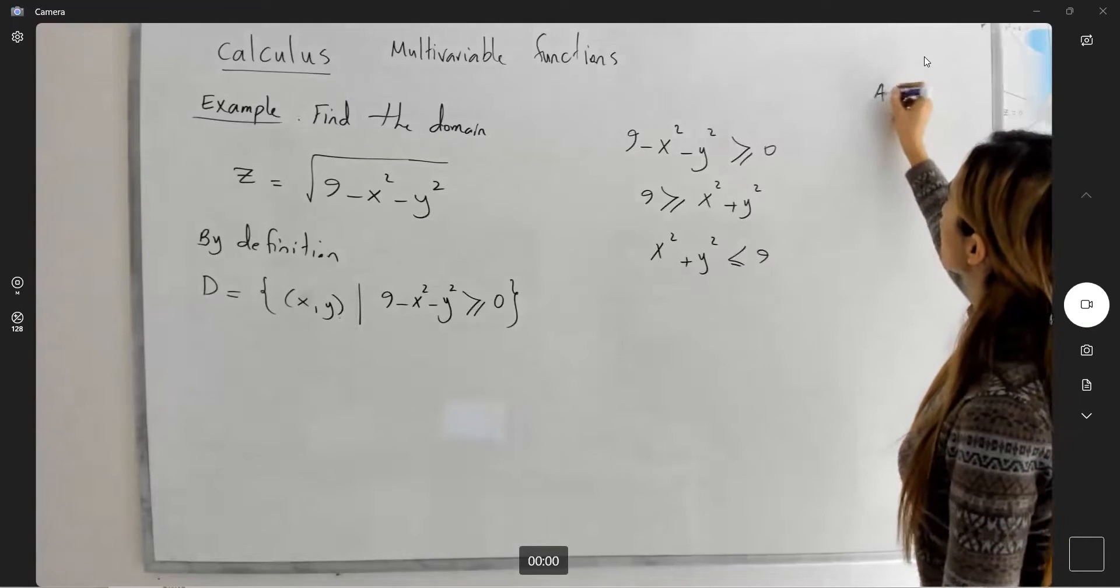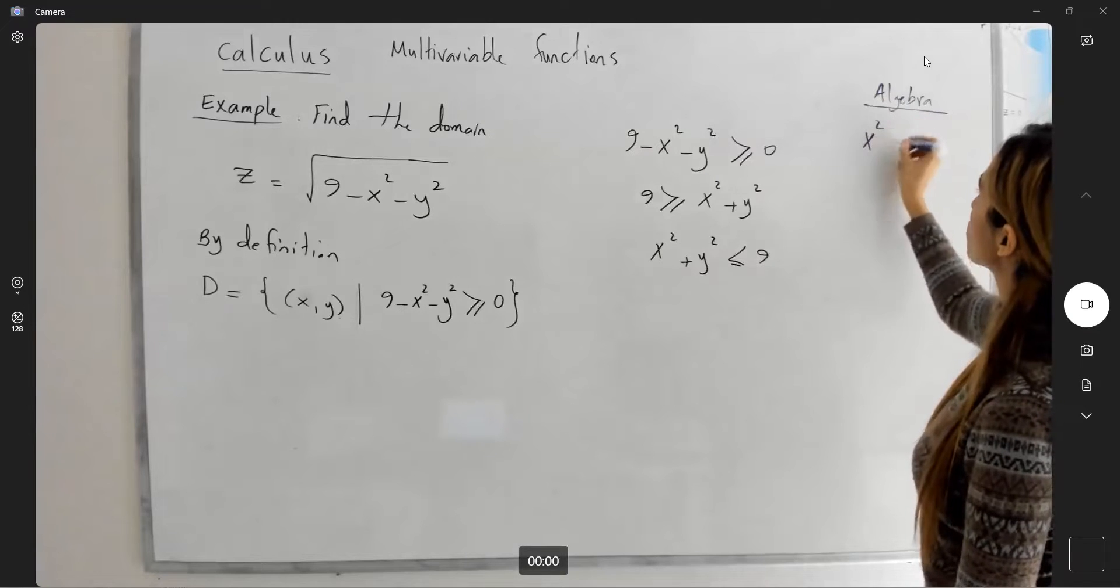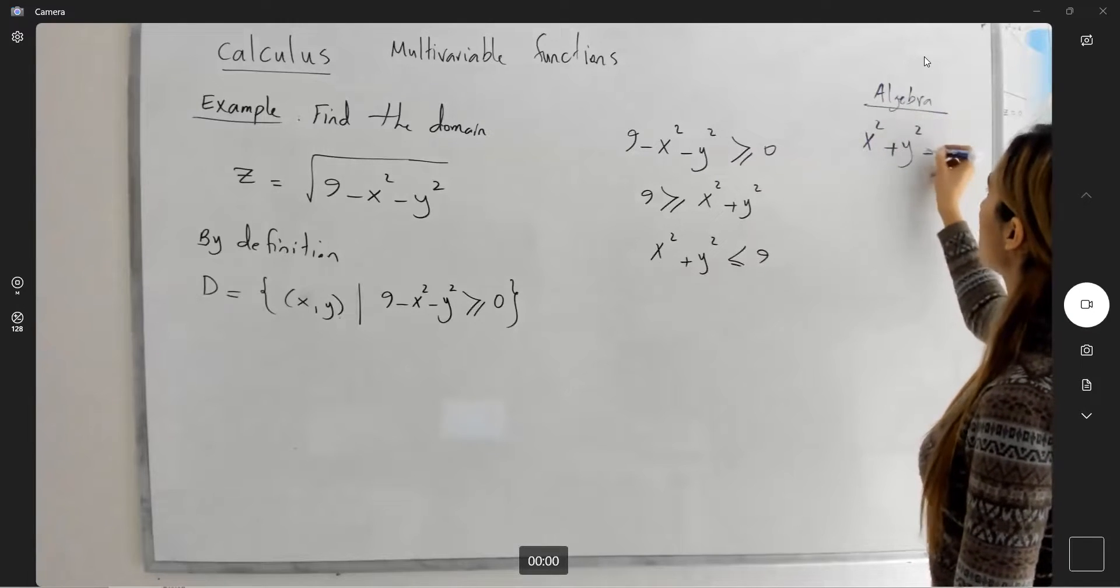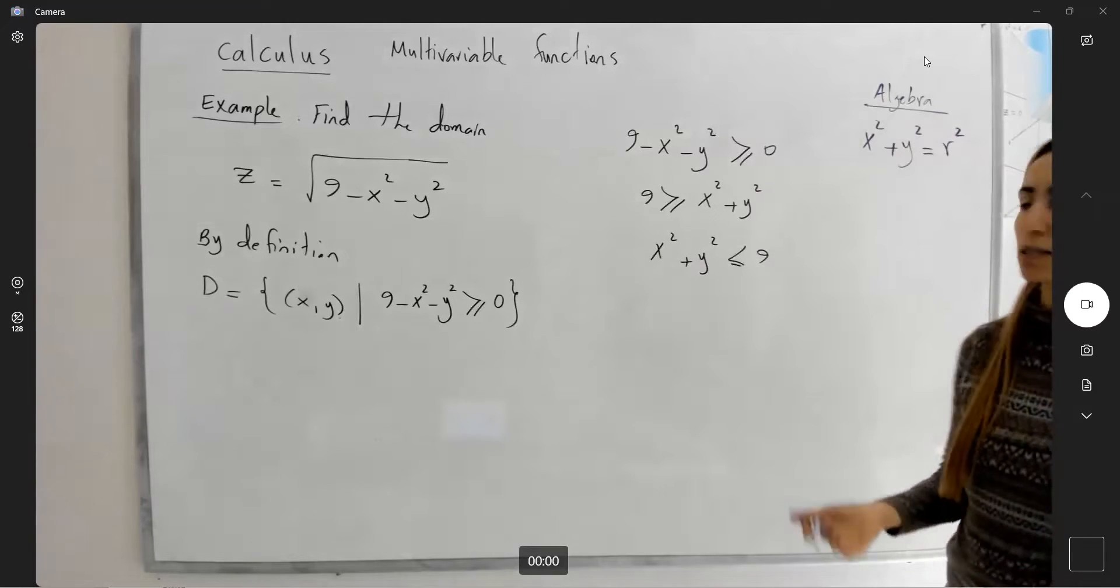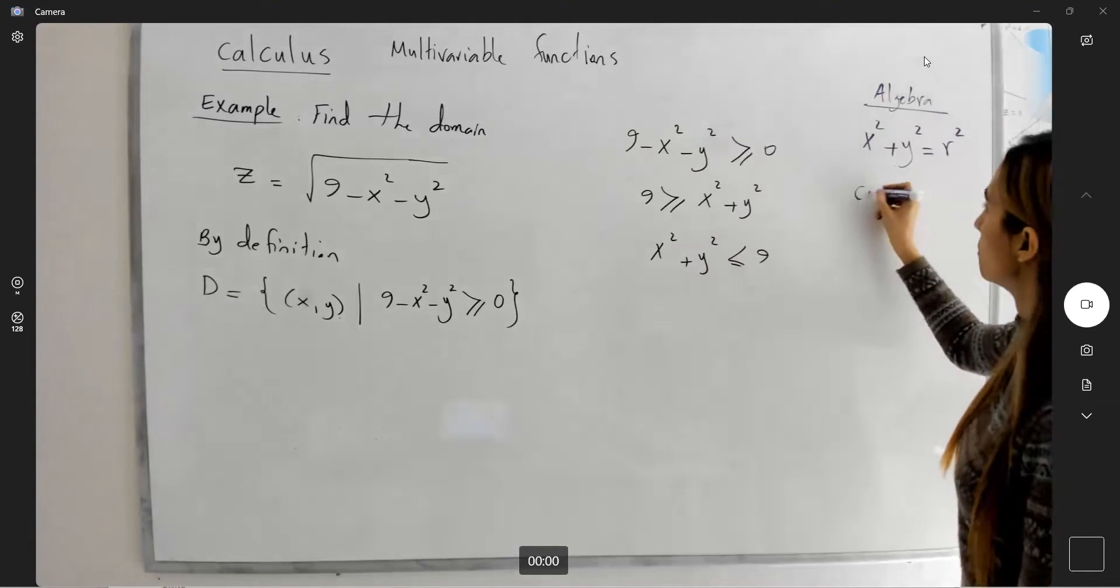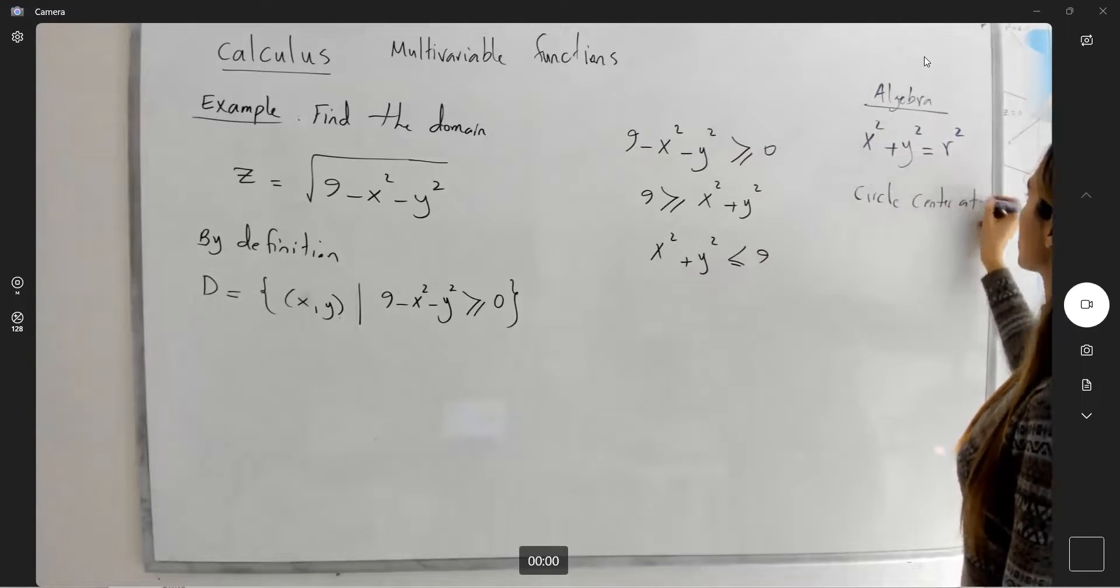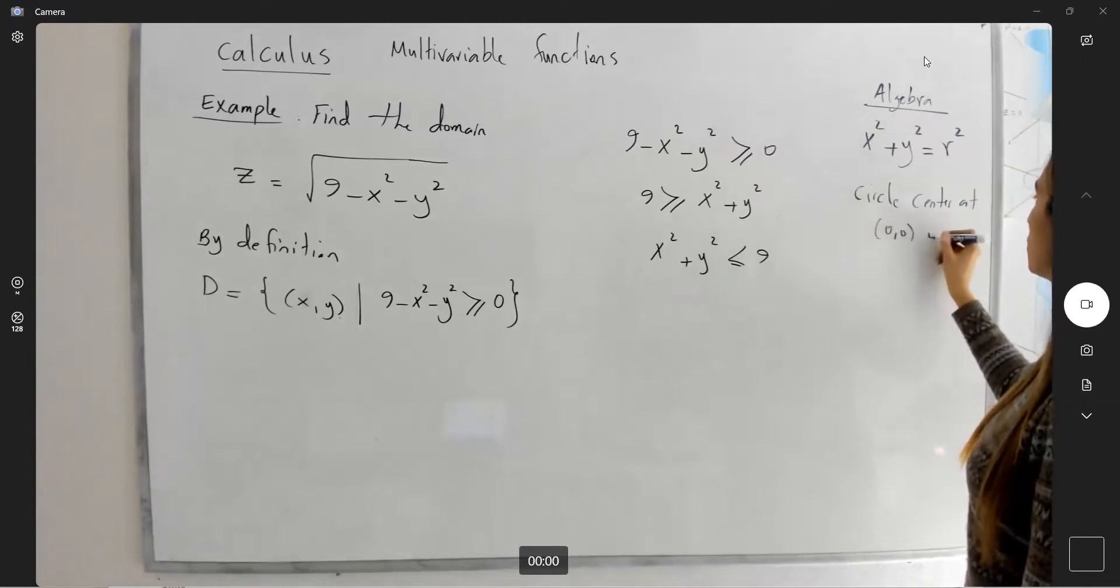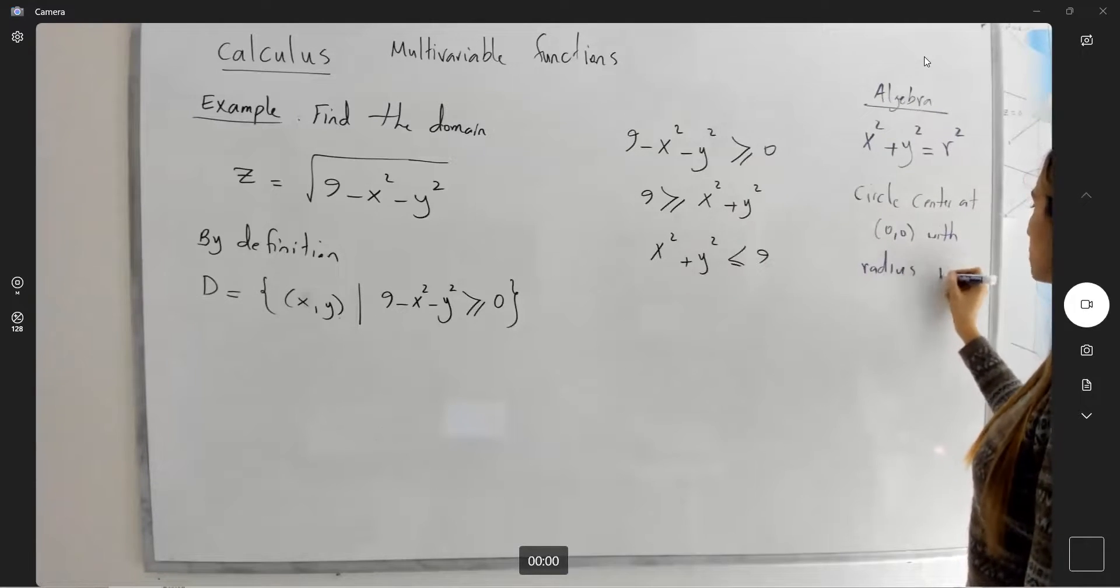Recall that in algebra, you learned about the formula x squared plus y squared equals r squared. What was it? It's a circle centered at the origin with radius r.